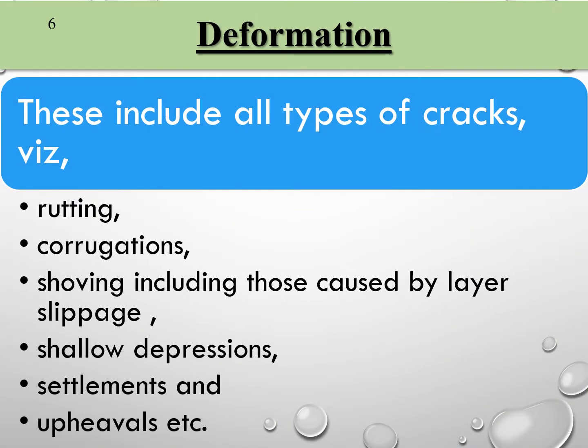Under deformation, the following types can occur on the road surface: rutting, corrugation, shoving, shallow depression, settlement, and upheaval.